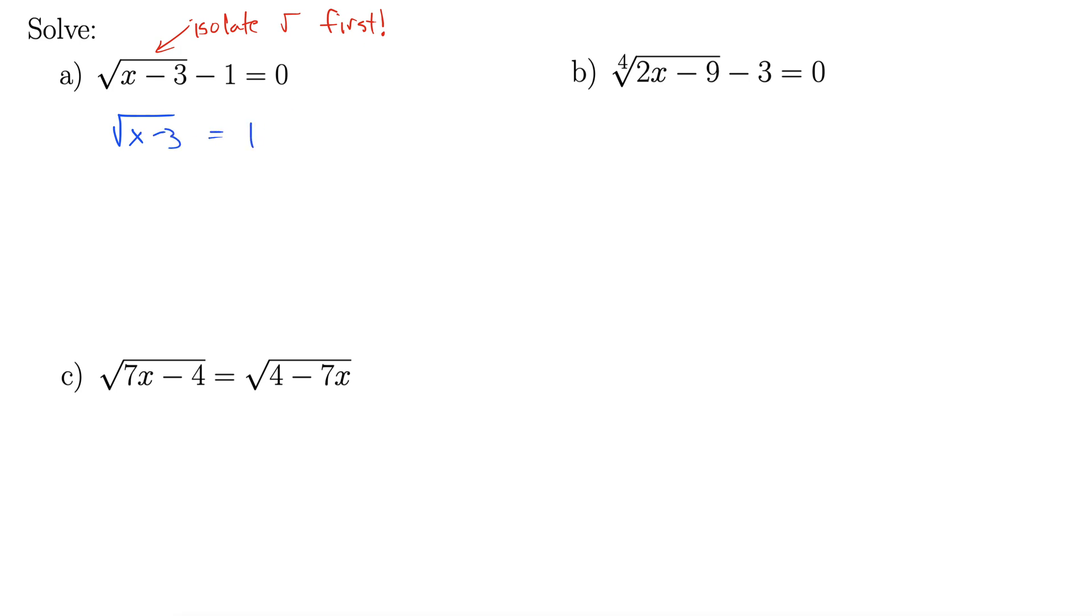Alright, well how do we undo a square root? We're trying to get that x inside there. Well, we simply square both sides. Squaring both sides, we'll get rid of that square root. And we're left with x minus 3 equals 1. Add 3 to both sides, x equals 4.